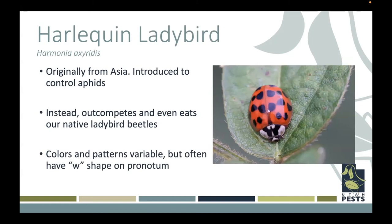The harlequin ladybird beetle, similar to the Vedalia beetle but a different species, was introduced from Asia to help control aphids. Instead, they tend to outcompete our native ladybird beetles, and we have seen drastic reductions in native ladybird beetle populations due in part to this harlequin ladybird. If you ever see a ladybug with a W-shape, or M-shape depending on which direction you're looking, on it, that's probably the harlequin ladybird beetle — the most common one we see now because they've outcompeted most of our native species. They do eat aphids quite heavily, and these are typically the ones you can buy in stores.